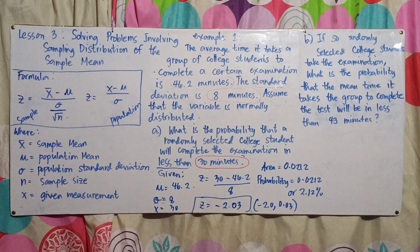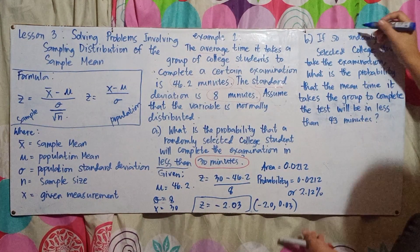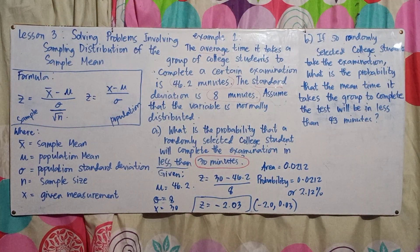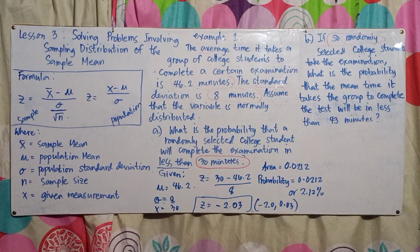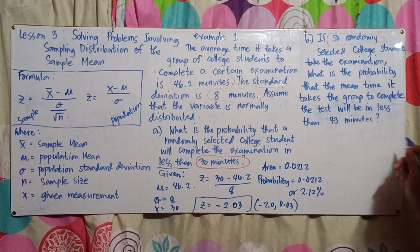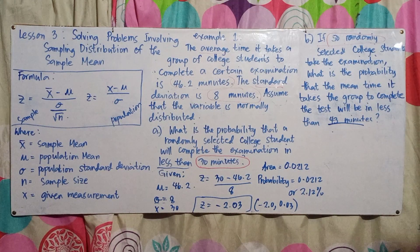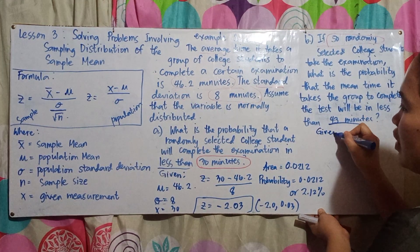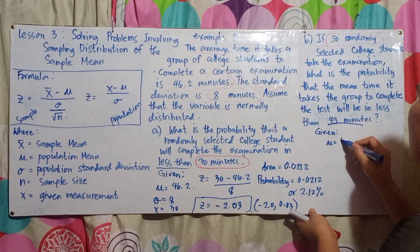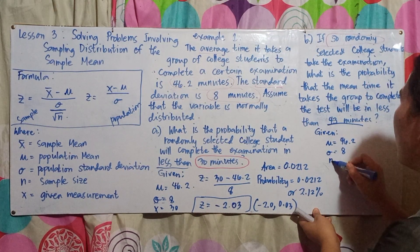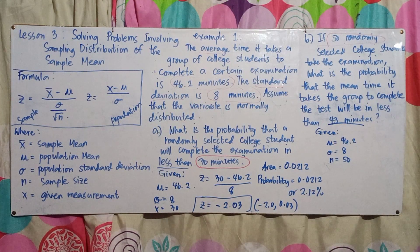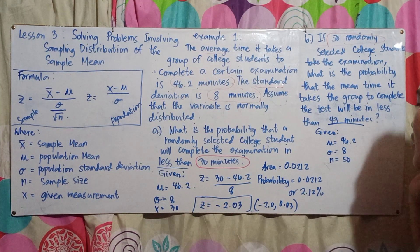Next, Letter B: If 50 randomly selected college students take the examination, what is the probability that the mean time it takes the group to complete the test will be less than 43 minutes? So we now have a sample of 50 students. The given values are: population mean is 46.2, standard deviation is 8, sample size n is 50.